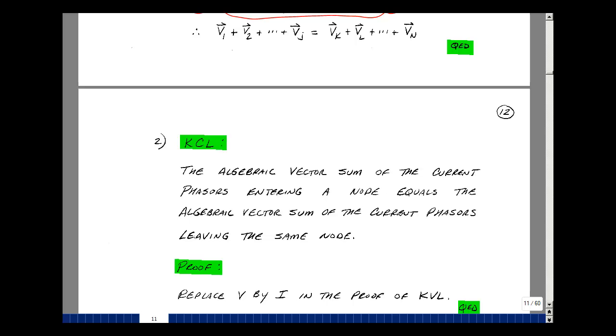Let me state Kirchhoff's current law. The algebraic vector sum of the current phasors entering a node equals the algebraic vector sum of the current phasors leaving a node. Basically the same wording we had in the time domain, except we're replacing current by the phasor current, and then our sum is now a vector sum.